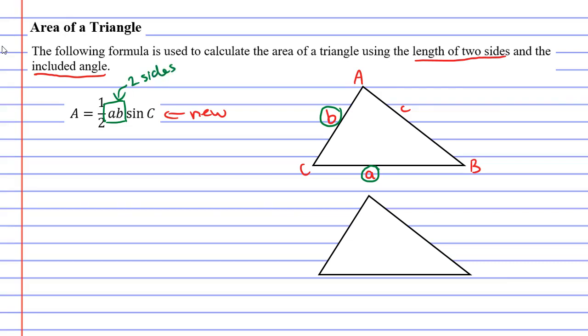We also have a capital C. This capital C represents the angle between the two sides a and b. So we also have an angle. And to be more precise about that, it's the included angle, the angle between sides a and b.